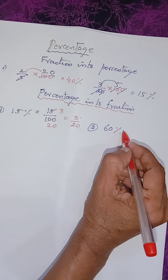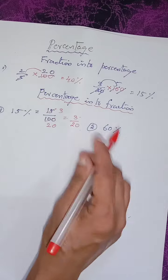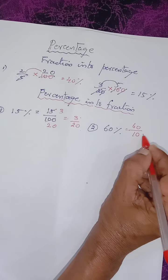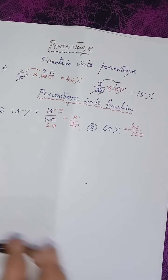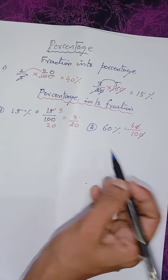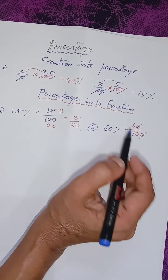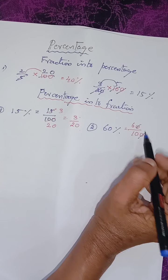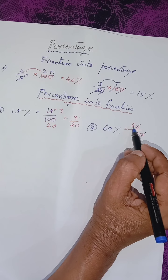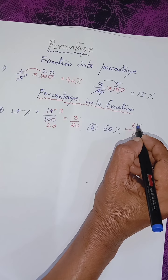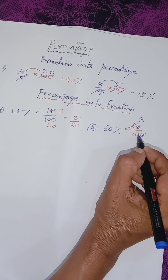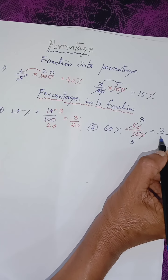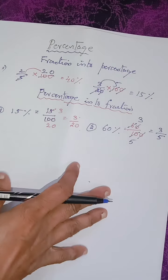Now let us see one more example: 60 percentage. So how to convert 60 percentage into fraction? Write 60 percentage as 60 by 100. Then cancel the zeros — you will be getting 6 by 10. For 6 by 10, can we cancel in the 2nd table? Yes. So in the 2nd table, 6 is 3 times and 10 is 5 times. So the simplest form is 3 by 5.